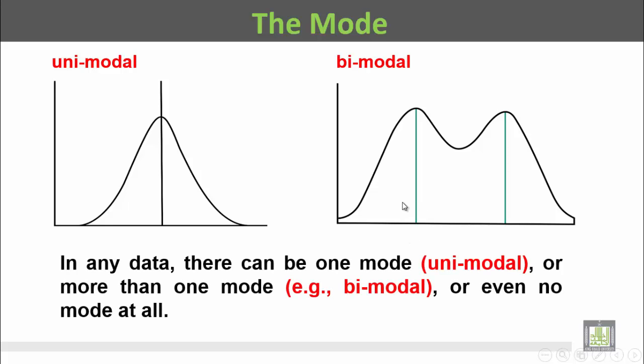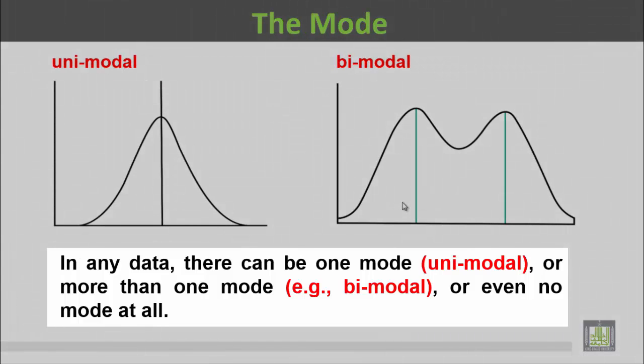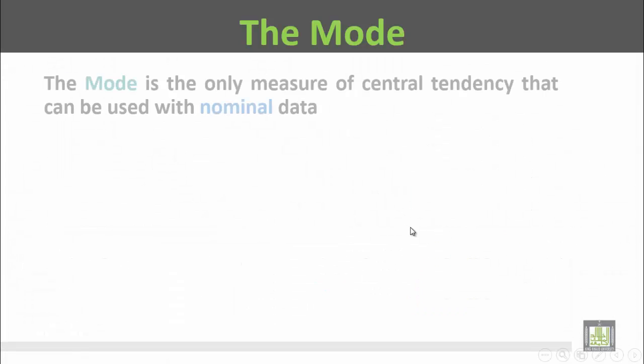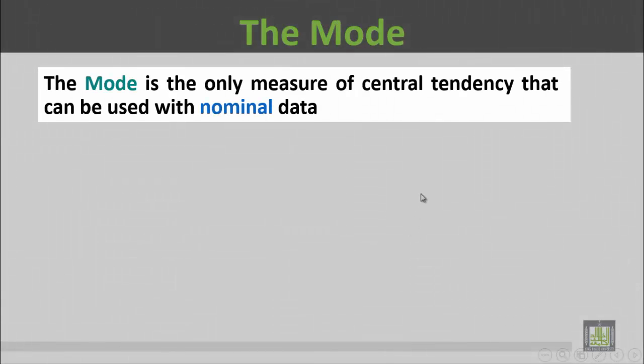In any data there can be one mode, unimodal, or more than one mode, bimodal, or even no mode at all. The mode is the only measure of central tendency that can be used with nominal data.